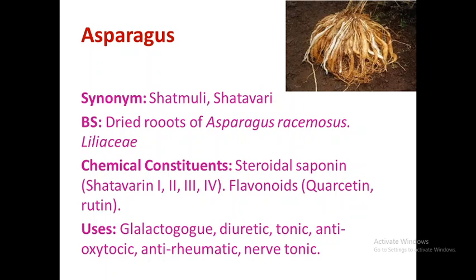Asparagus is also known as shatamuli or shatavari. These are the dried roots of Asparagus racemosus belonging to family Liliaceae. This asparagus contains steroidal saponins as a major chemical constituent.